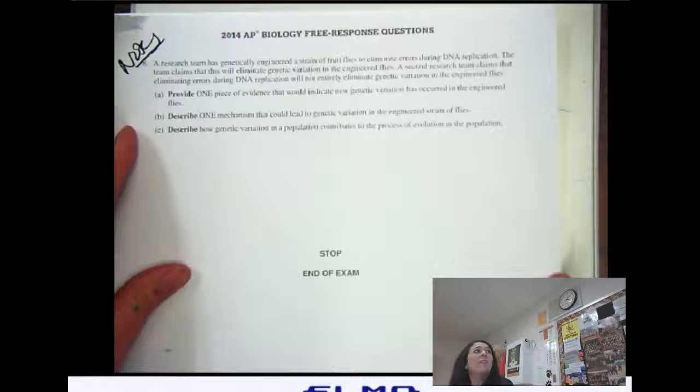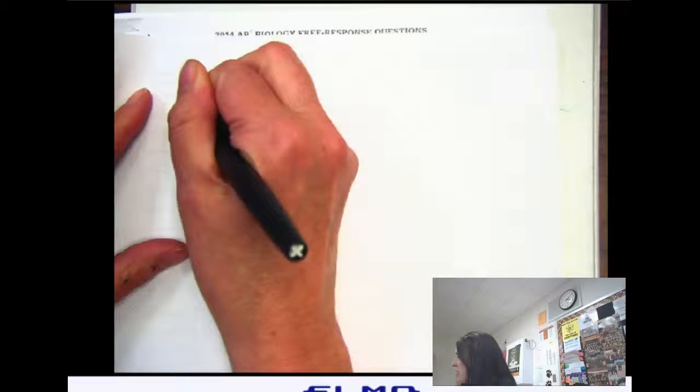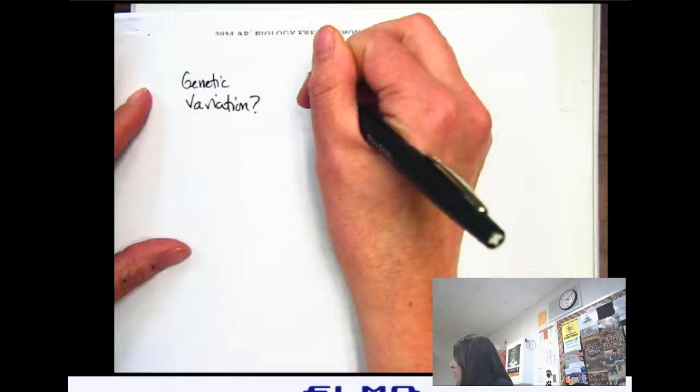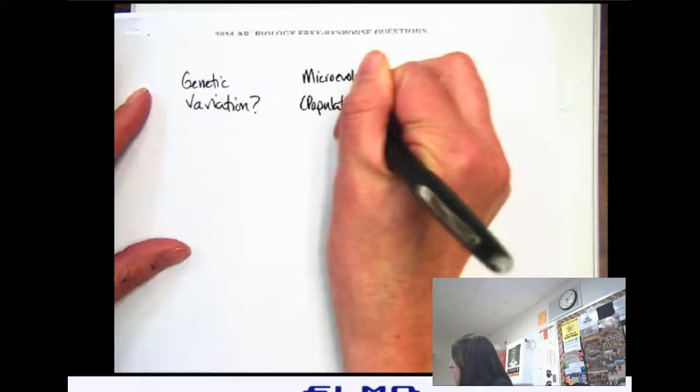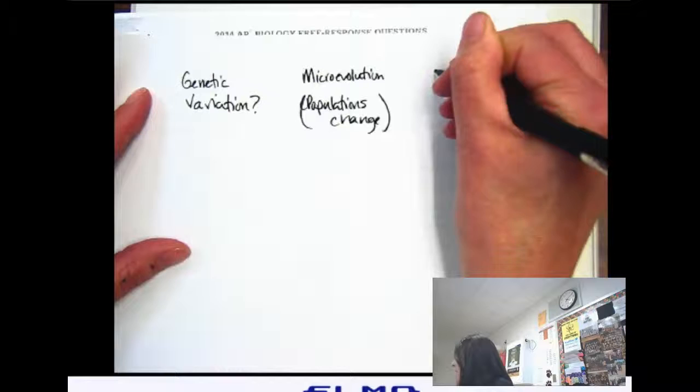Okay, so on your evolution test there were kind of like three themes. There was like where does genetic variation come from, there was another one about just microevolution which is how do populations change, and then there was macroevolution.